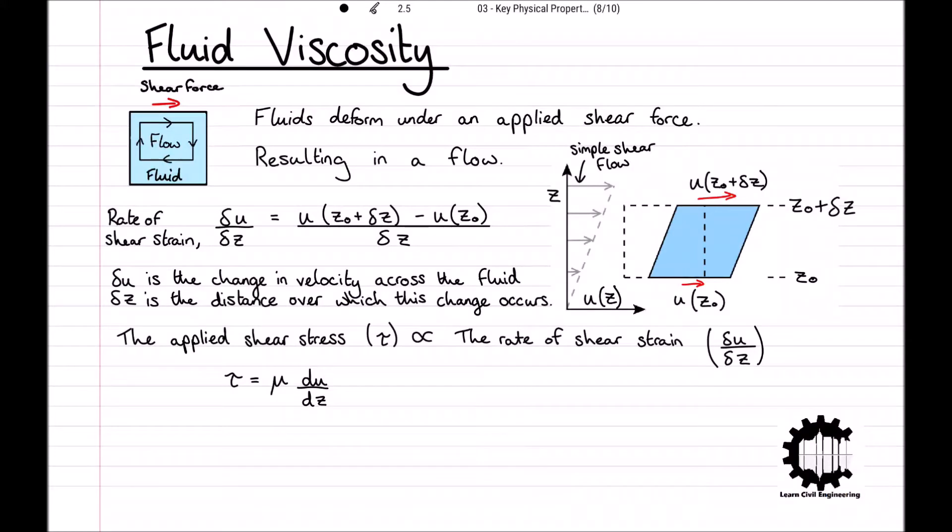Making the transition to this equation, we have taken the limit as the size of the fluid element tends to zero, i.e., delta u over delta z tends to du over dz as delta z tends to zero. This equation is known as Newton's law of viscosity.